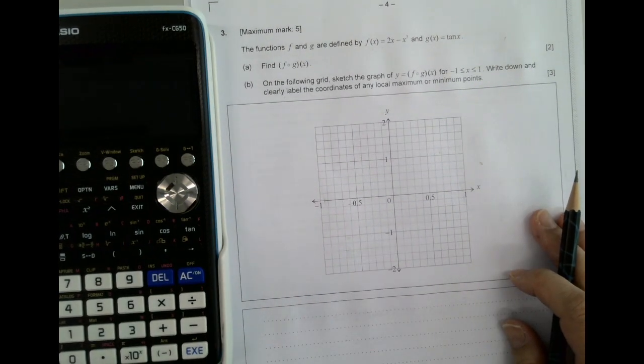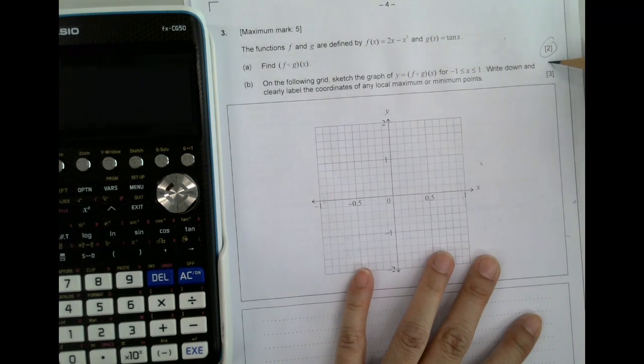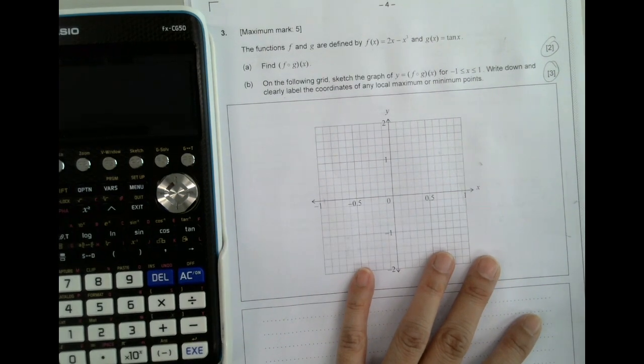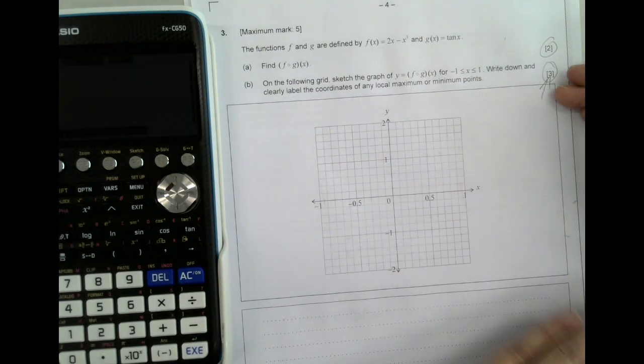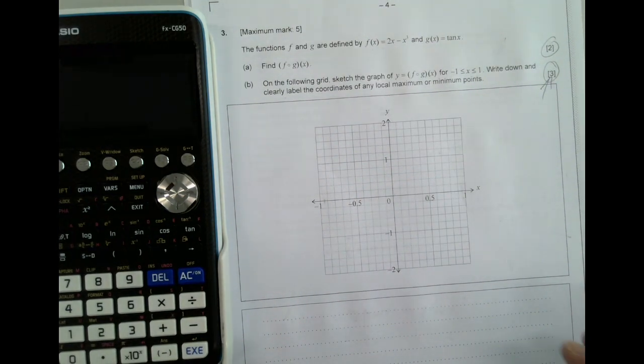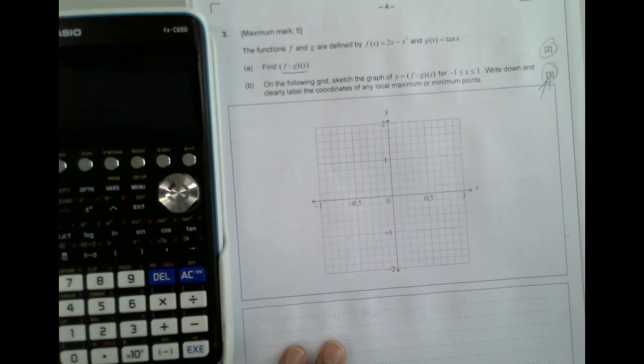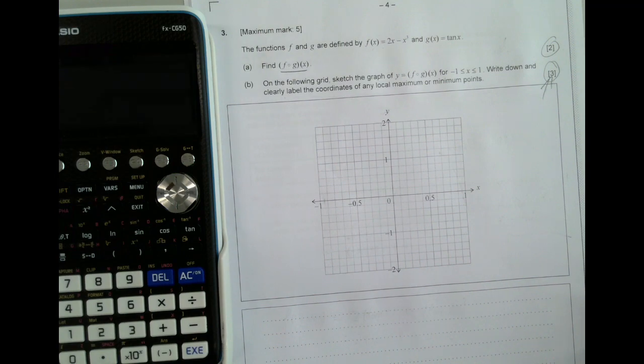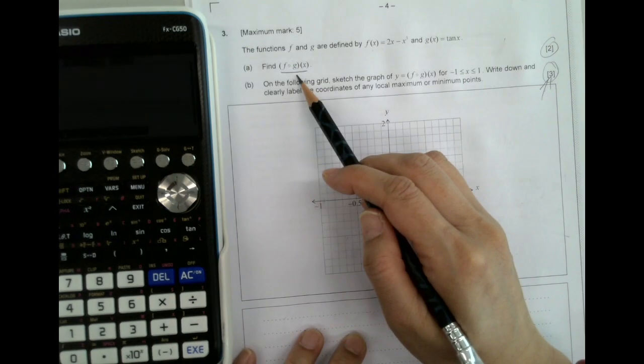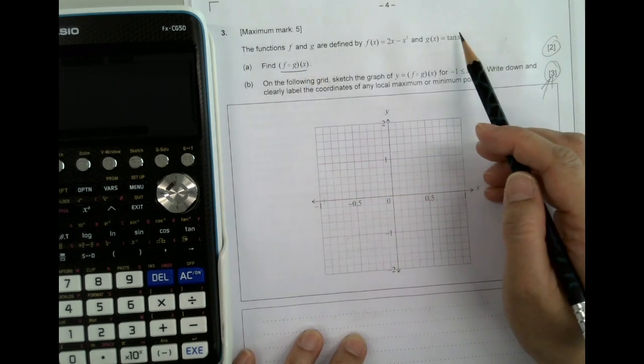This is a graphing function, pretty straightforward, five marks only. Actually, typical five, three marks for the drawing. So let's get started with those. First of all, this is a composite function.